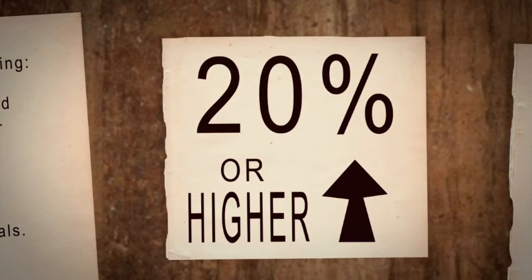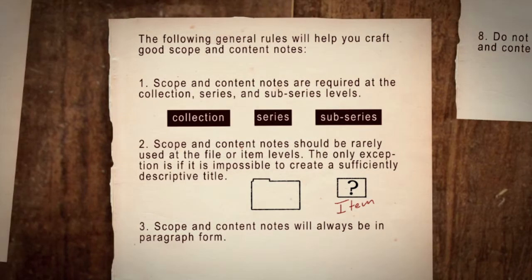Remember that what is described in the scope and content note should comprise a significant portion of the archival materials. A good rule of thumb is 20% or higher. The following general rules will help you craft good scope and content notes.